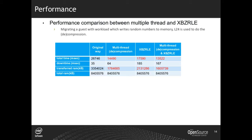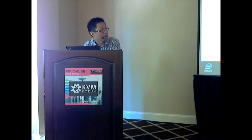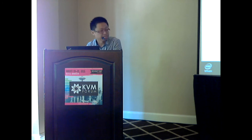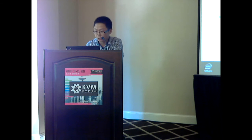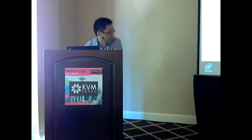This table shows the performance comparison between multi-thread compression and XBZRLE. The next table shows the performance gain when skipping unused guest pages in the RAM bulk stage: total migration time reduced about 65%. The results show the possibility of performance gain achievable by this optimization, although we need to do more work to address the performance impact.